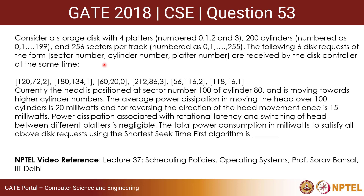Hello all. Today we will be looking at a question given in GATE 2018. Consider a storage disk with 4 platters numbered 0, 1, 2, and 3; 200 cylinders numbered 0 to 199; and 256 sectors per track numbered 0 to 255. The following 6 disk requests of the form sector number, cylinder number, and platter number are received by the disk controller at the same time.